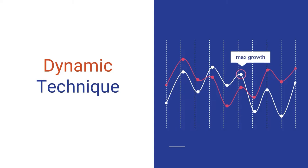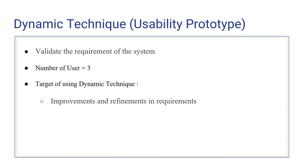Good morning. I am Dio Sunan and I am going to present the dynamic technique. The dynamic technique that we use is usability prototype. In dynamic technique, prototyping is used to validate the requirements of the software by showing prototypes to users and gathering feedback from them. We carry out this technique on three users. The target of this technique is to make improvements and refinements in requirements.